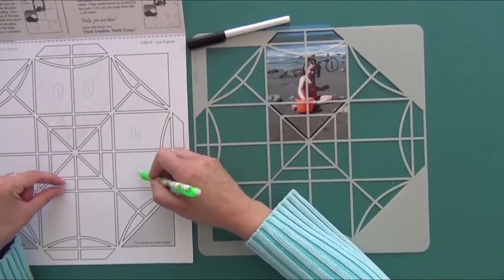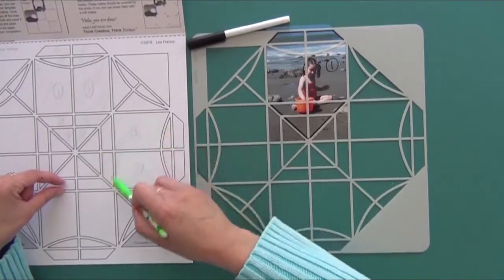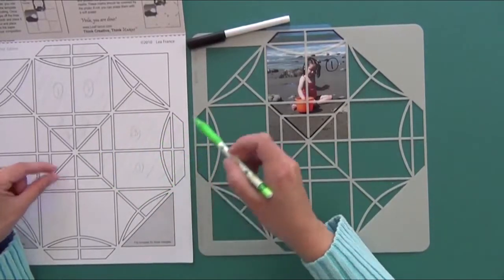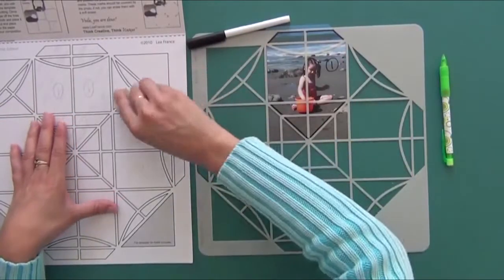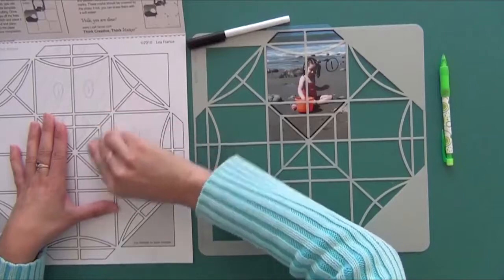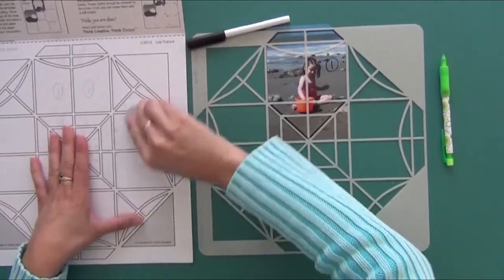For example, number two here, number two here, and then you fill that space. At the end when you're done with your layout, you simply erase for the next time you have to build a different layout.